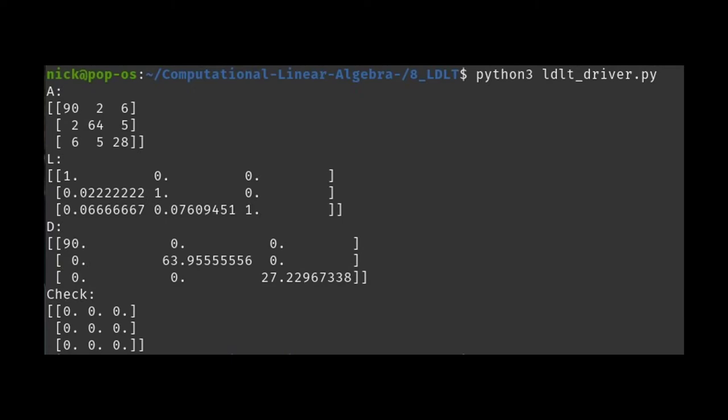But if everything works out properly, you should see something like this. I'll encourage you to, again, fork the code, clone the code, obtain it in one way or another via GitHub or GitLab, and start to play with it. And this is what you should see when everything works out properly. We have our lower triangular matrix. Again, ones along the diagonal right here. And then we have unique values in our diagonal matrix. And then when we check everything out, we get the zero matrix back. So everything is working properly.